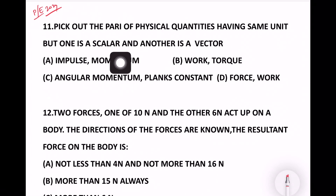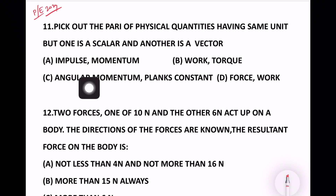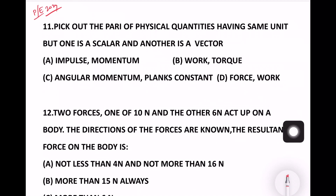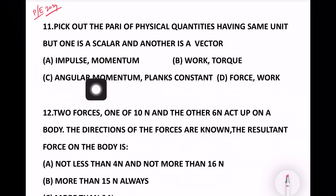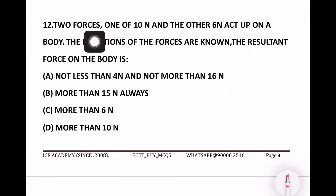11th question: Pick out the pair of physical quantities having the same unit but one is scalar and another is a vector. Options are: impulse & momentum, work & torque, angular momentum & Planck's constant, and force. Work is a scalar and torque is a vector, but their units are the same. So option B is the right answer.